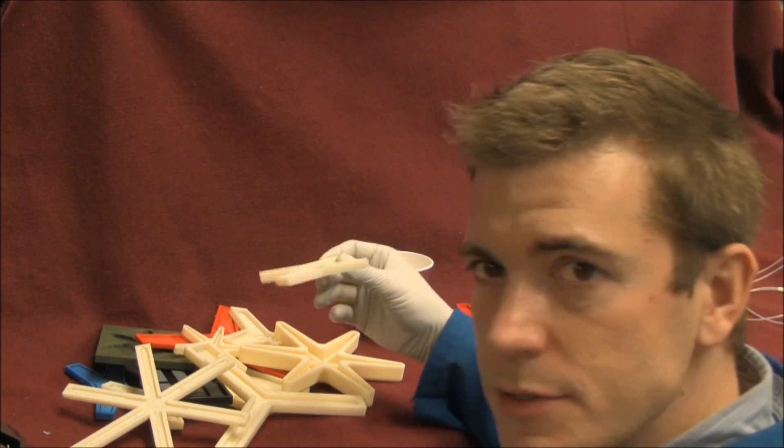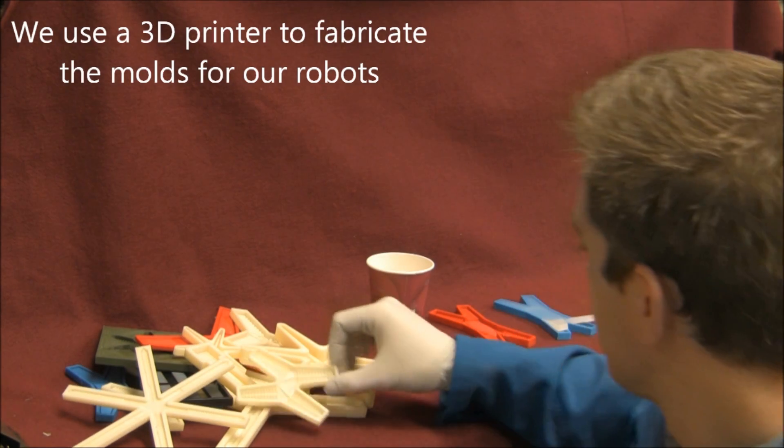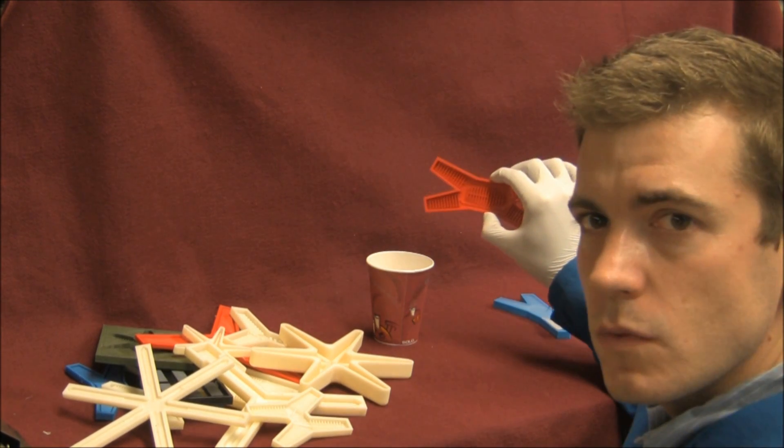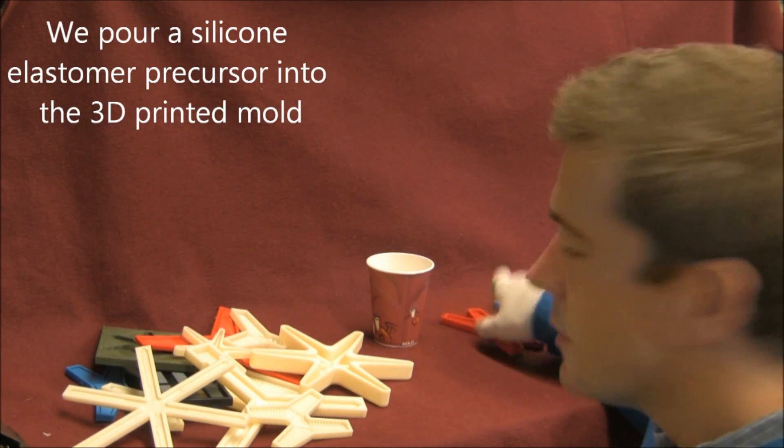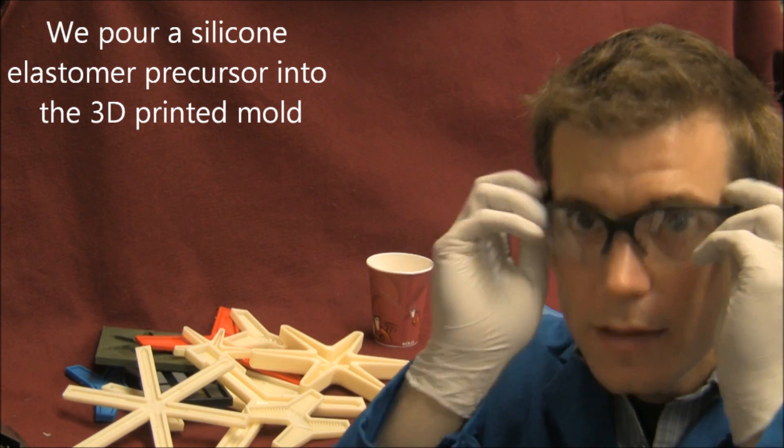We use a 3D printer to print these molds, and once we've decided on the final architecture, we then pour a silicon elastomer precursor into the mold.